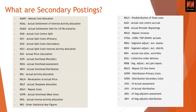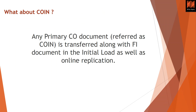You might ask: if I post an FI document, does the system also post a CO document? Yes, it does. The business transaction triggered by FI when posting a CO document is COIN. However, COIN is not part of COBK — it is part of the replication when the FI posting is replicated. So any primary CO document referred to as COIN is transferred along with the FI document in both the initial load and online replication. COIN is therefore out of scope of the COBK table replication.